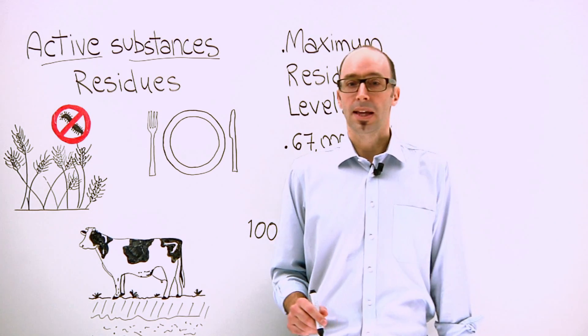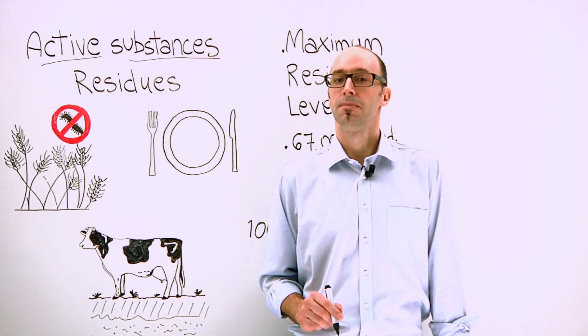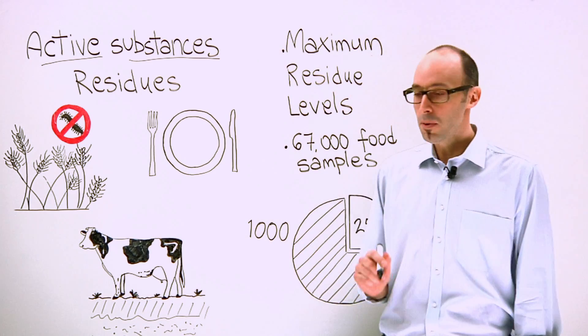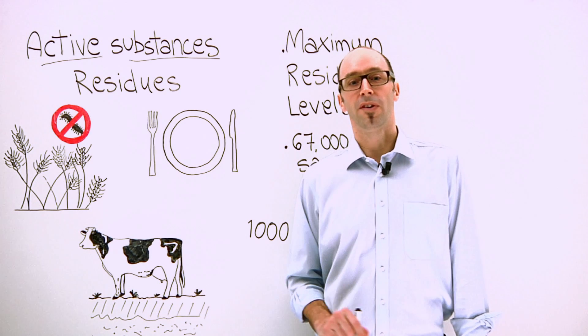In some cases, the chemical works by confusing insects. In other cases, they make the crop less palatable for pests. But commonly, they work by killing the damaging insects, weeds, or fungi.